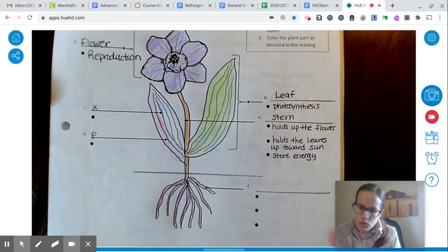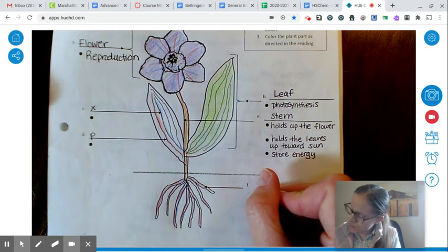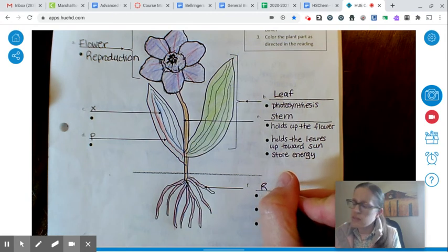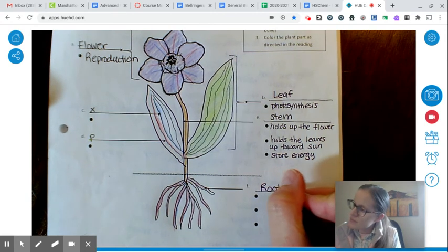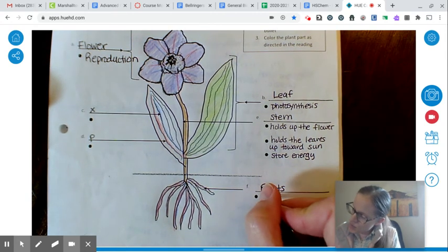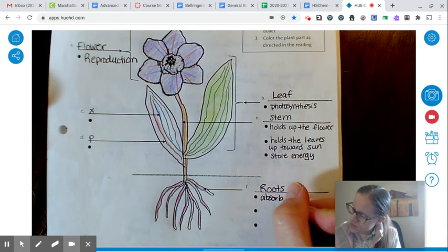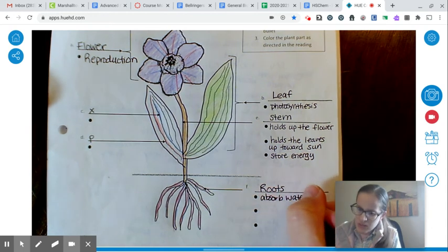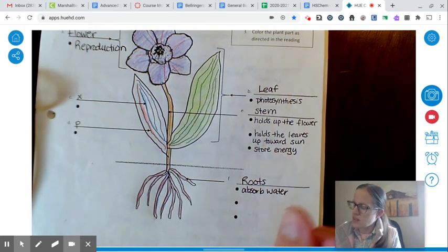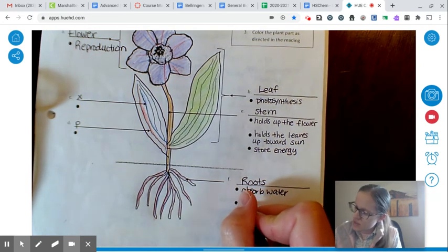Down here at the bottom we have the roots. The roots should be brown. The roots absorb water. They anchor the plant in the ground.